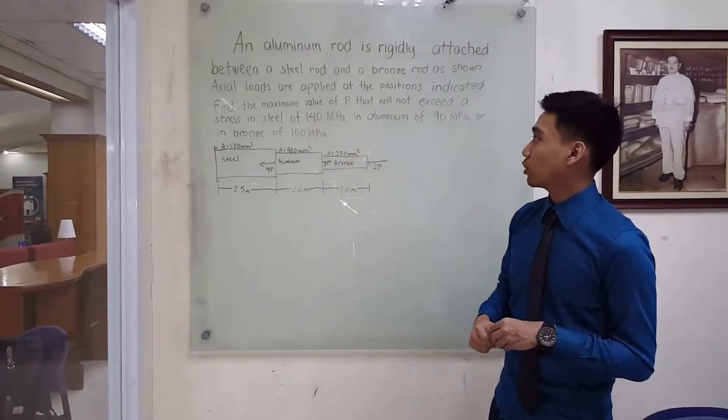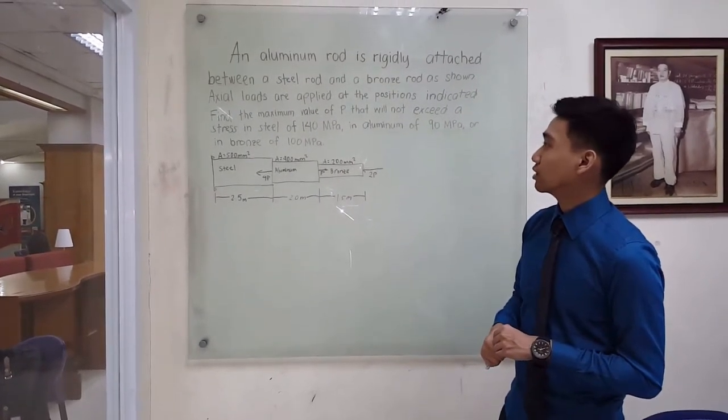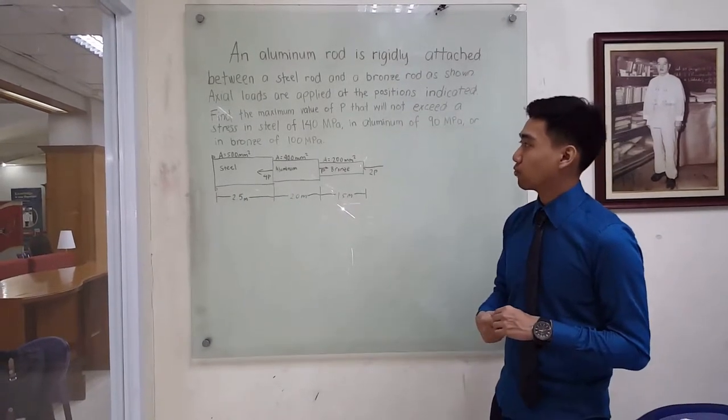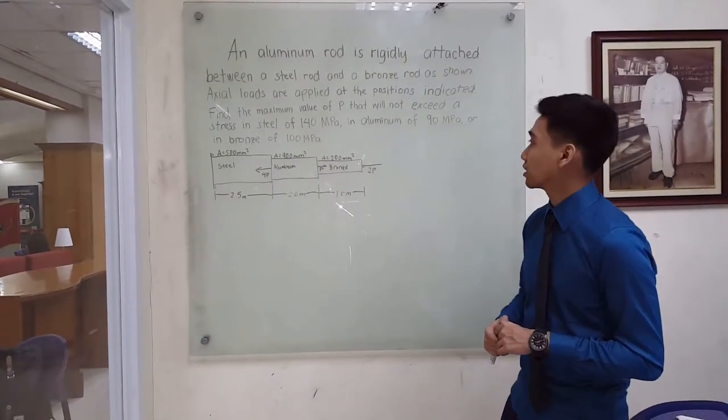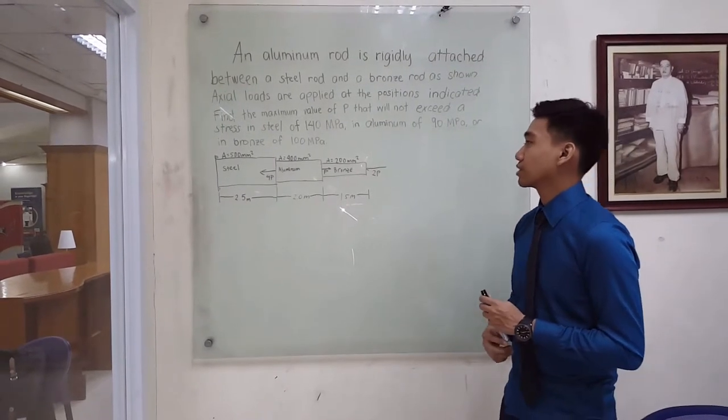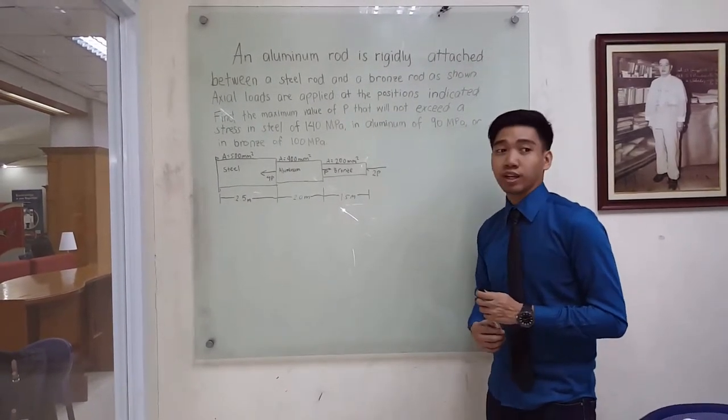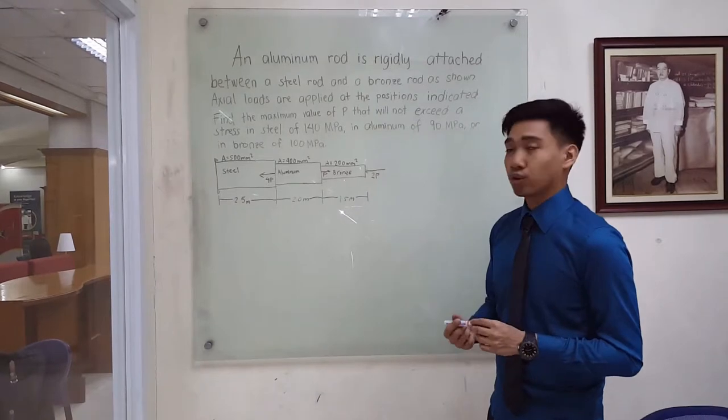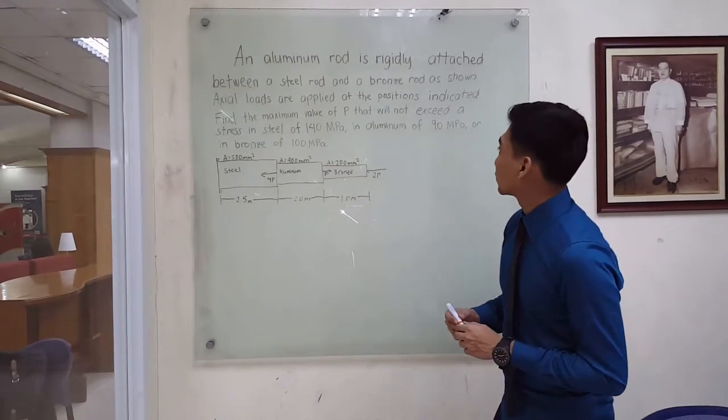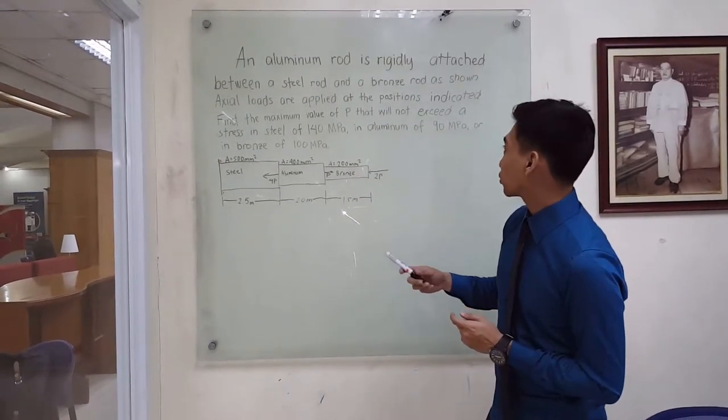We are to find the maximum value of P that will not exceed a stress in steel of 140 megapascals, in aluminum of 90 megapascals, or in bronze of 100 megapascals. So let's begin.